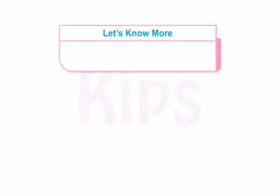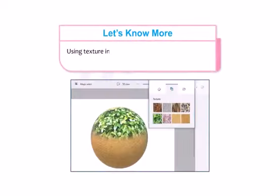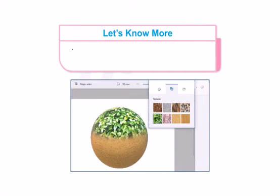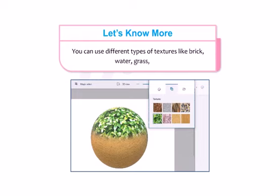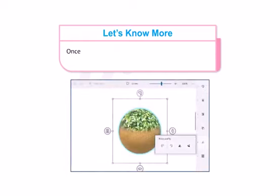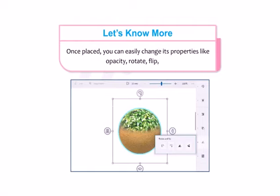Students, let us know more. Using texture in Microsoft Paint 3D is similar to using a sticker. You can use different types of textures like brick, water, grass, etc. Once placed, you can easily change its properties like opacity, rotate, flip, etc.